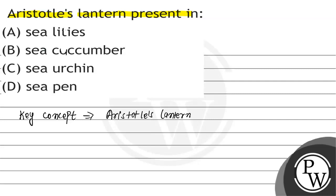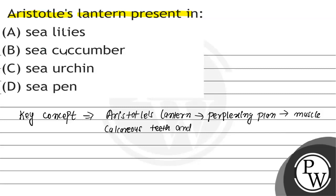Aristotle's lantern में flexing of muscles होती है, साथ ही साथ calcareous teeth और plates की shaping होती है. यह जो है, एकाइनोइडीज में पाए जाते हैं, और mastication में working देखे जाते हैं.